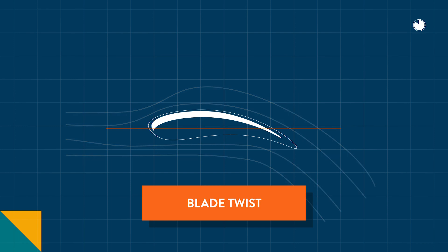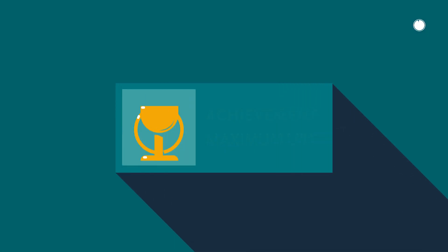This is why the tip of the blade is twisted into the direction of the airflow. It ensures the right angle of attack to harvest as much energy from the wind as possible.